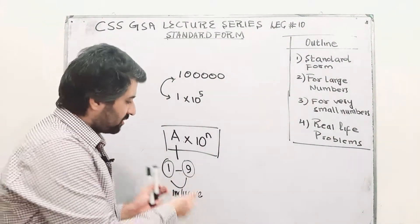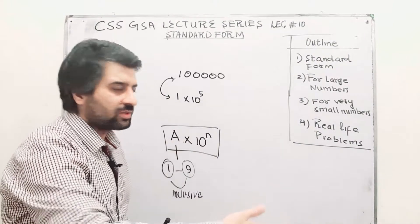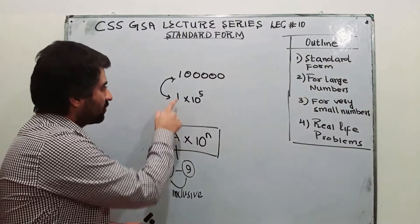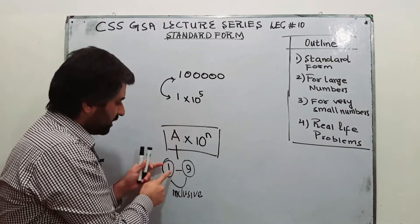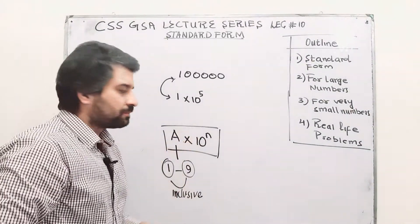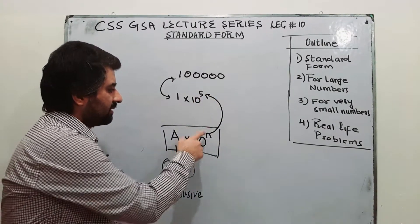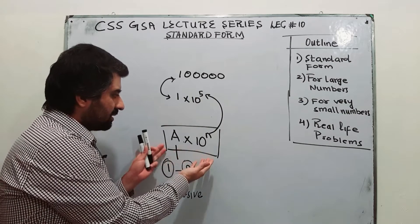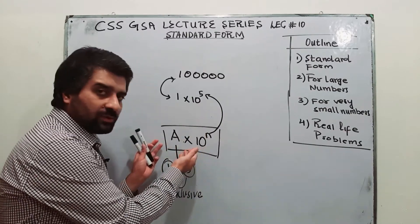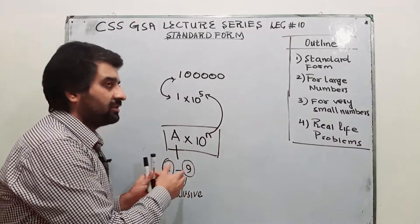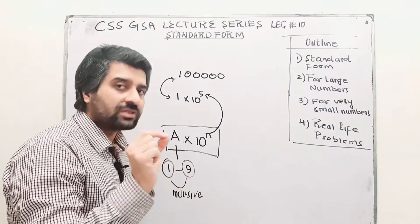Now that depends on the question — what number is going to be over here — but you will be having a single digit, either 1, 2, depending on the question. Like here I have 1 lakh, so I have got 1 over here. If I would be having 2 lakhs, so in place of a I would be having 2. So a depends on the number. What about n? N is the power of 10. So this is the basic standard form. A will range from 1 to 9; it cannot be a 2-digit number — it will be a single digit number — and here you will be having a power of 10.